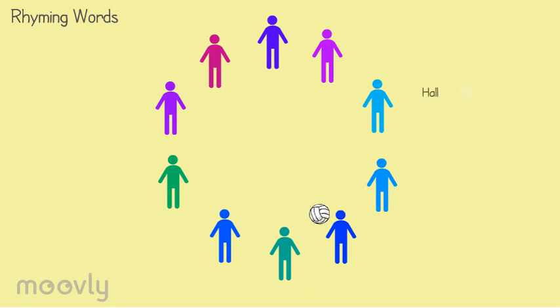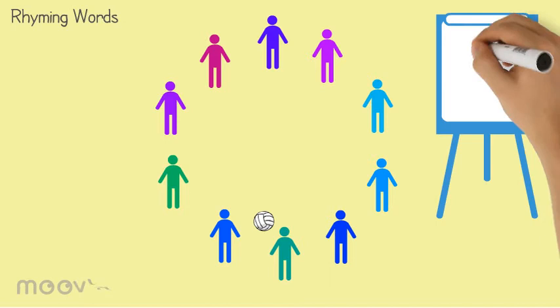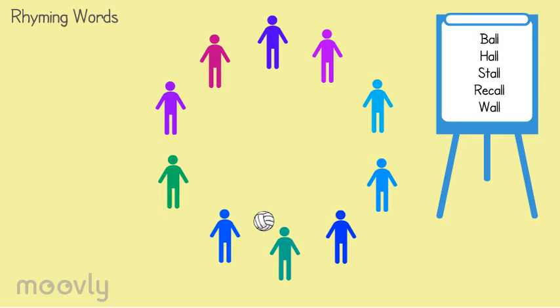The trainer writes down the words and makes sure they won't say the same word twice. When someone isn't able to come up with a rhyming word, the trainer calls out the number of words they came up with. This is the end score. And the team starts a new round trying to break their own record.